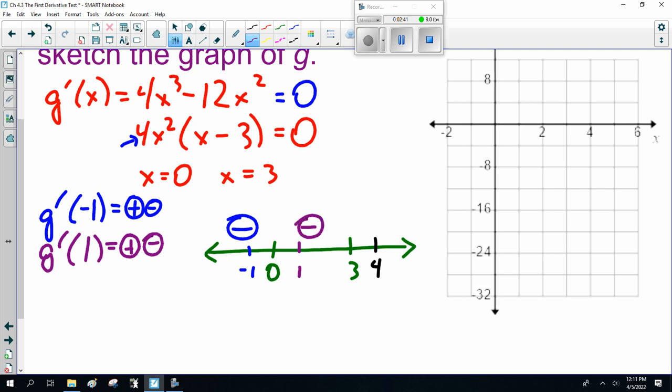So in the middle, between 0 and 3, g prime of, say, 1, well that's going to be a positive number. 1 minus 3 is going to be negative, so that continues to be negative. It's going to be positive times positive. Next, minus 1 and plus 1, the derivative is negative, which means we don't have an inflection point there.